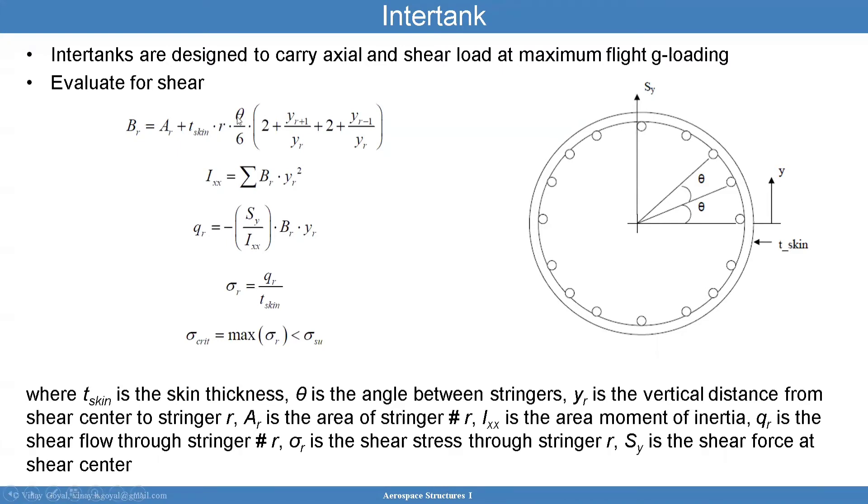R here is a radius, theta is the angle between stringers, and then YR plus 1 divided by YR for that particular stringer of interest you can calculate this ratio. YR plus 1 divided by YR and YR minus 1 divided by YR. If you're this one here you're calculating YR plus 1 that height, and if you're this stringer you're 0 basically, so you'll be able to calculate these ratios. Then you have theta over 6 times the radius of the tank and the thickness. You have all these numbers, you can calculate BR. Let me go now from top to down. You calculate BR plug it in here.